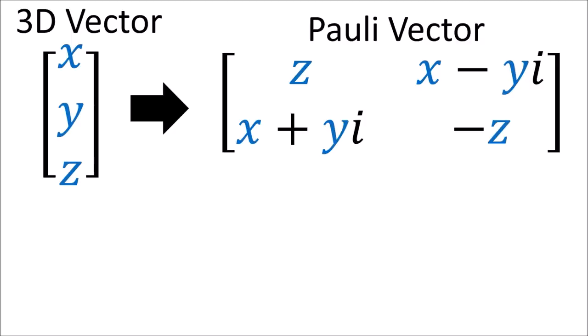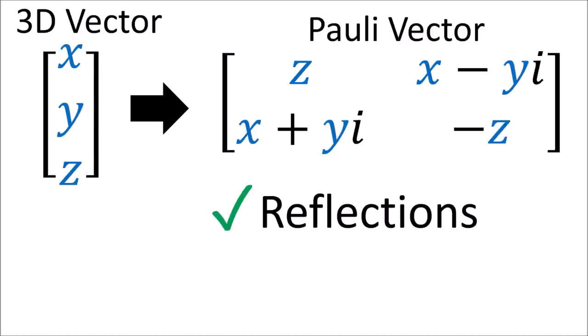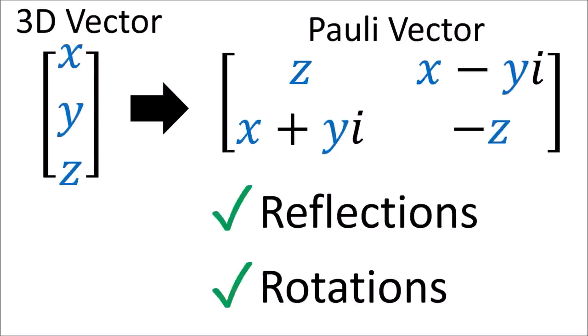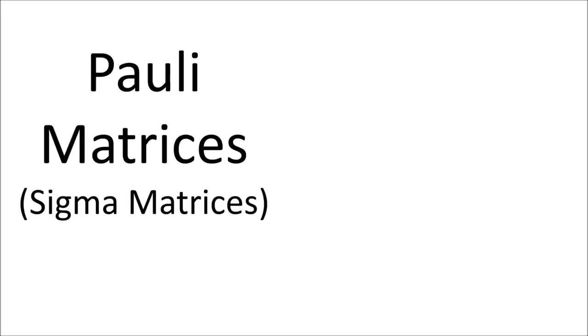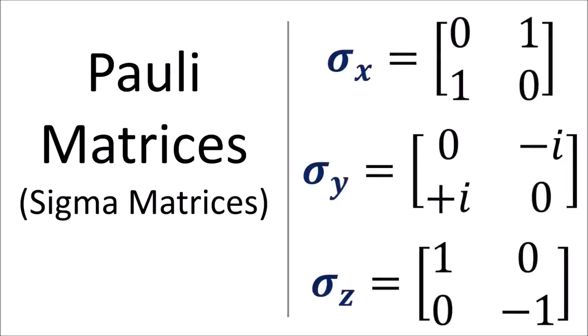Writing a vector as a 2x2 matrix like this probably looks pretty random, but it turns out that this 2x2 matrix is very useful for when we want to do geometric transformations on our vector, like reflections and rotations. In order to understand why this form is useful, we need to spend a bit of time talking about the Pauli matrices, also called the sigma matrices.